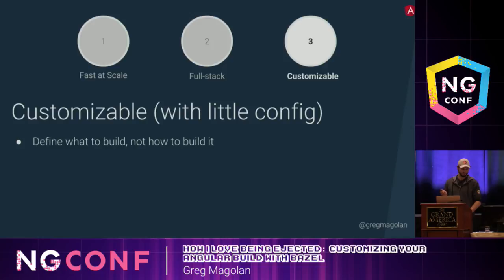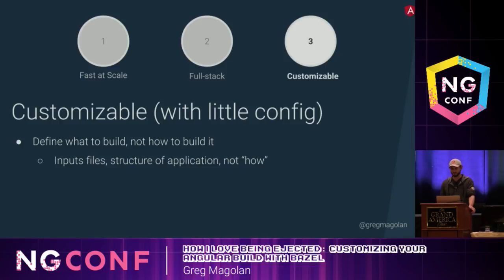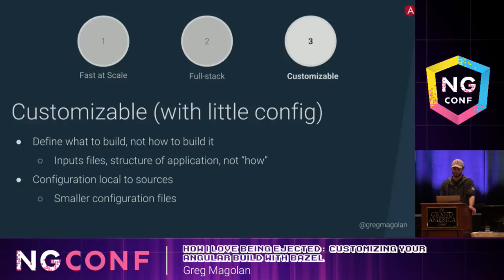With Bazel, you generally define what to build and not how to build it. Bazel needs to know about your input files and the structure of your application, but the how-to configuration is mostly handled by Bazel for you — it's abstracted away. In Bazel, configuration is local to sources. You typically have a Bazel configuration file per directory in your source folders. This makes each configuration file smaller and easier to maintain, and it also means that sub-teams can own their own build configurations, with fewer merge conflicts.